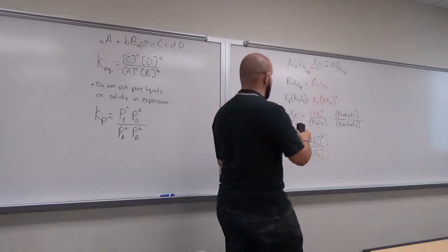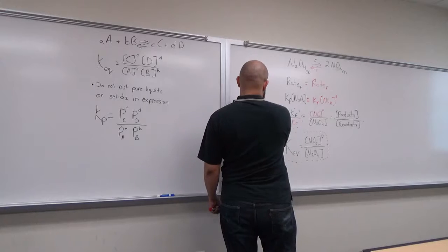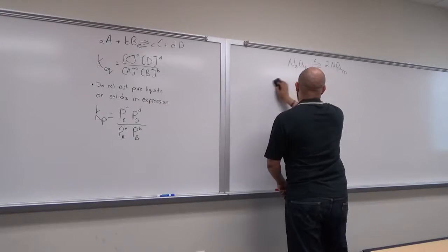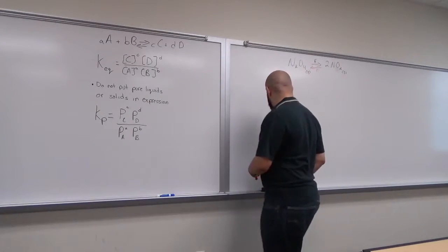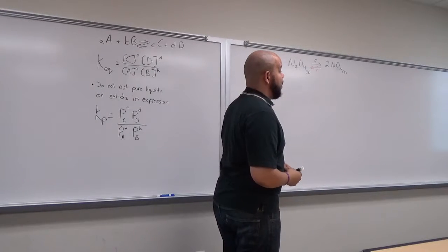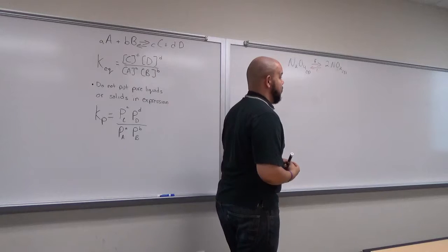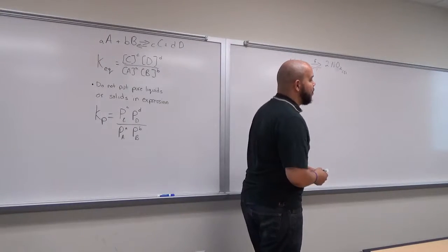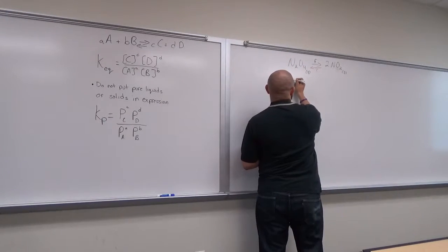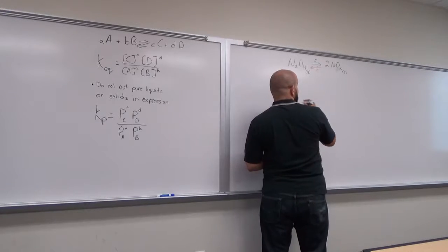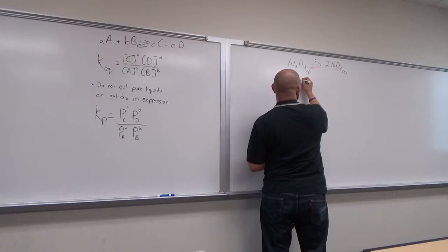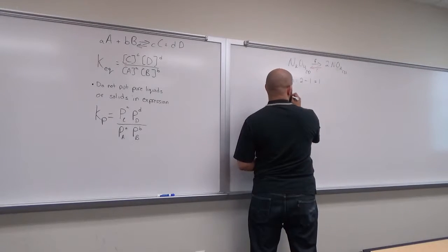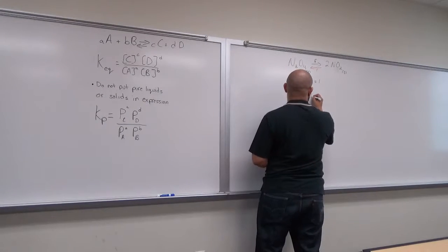Let's go ahead and use this reaction. For this gas-phase reaction, Kp = Kc(RT)^ΔN, where delta N is moles of gaseous product minus moles of gaseous reactant. Our delta N equals 2 minus 1, which equals 1. So the equation becomes Kp = Kc · RT.